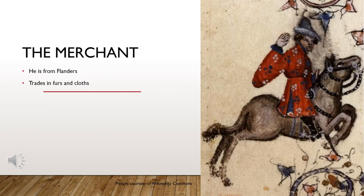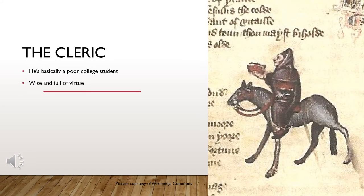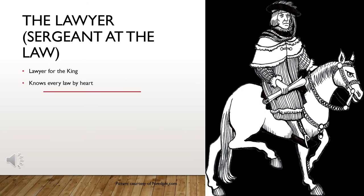Now we move into the middle class, starting with the Merchant, who sells furs and cloth — a very lucrative business at the time. Then we have the Cleric, basically your starving college student: he studies philosophy and spends all his money on books, so his outfit is nearly falling apart. He doesn't speak much, but it's obvious he is very wise and full of virtue. The Lawyer is commissioned by the king and knows every law in England by heart.